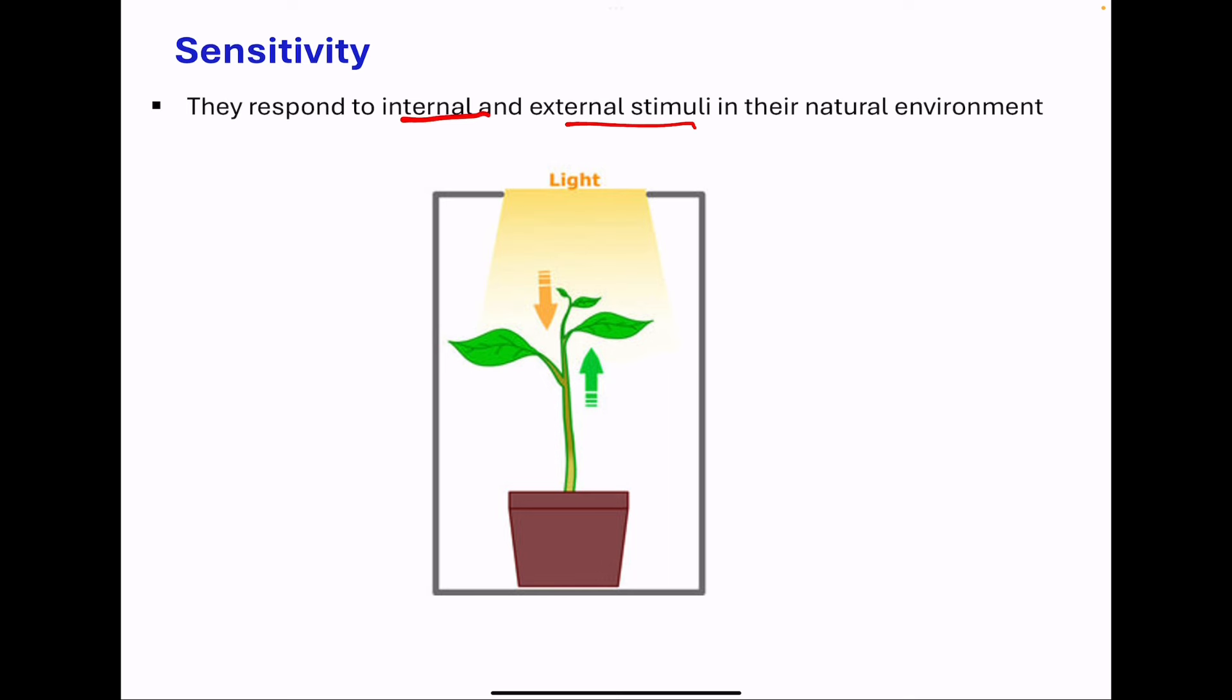When an animal steps on something sharp, it's going to move immediately. We have receptor cells that convert that stimulus into nerve impulses sent to the brain, and there is response towards that specific stimulus. In some organisms, these responses allow them to detect food, detect mates, and so on.